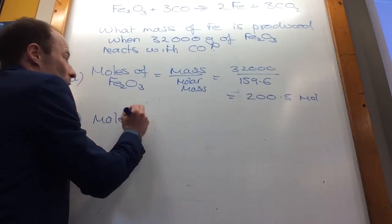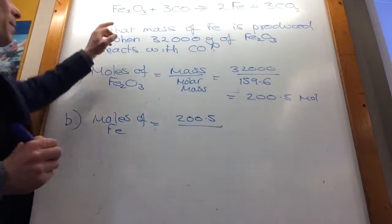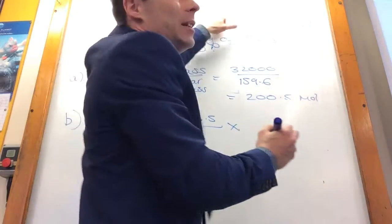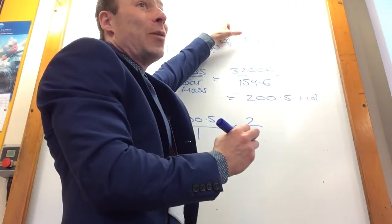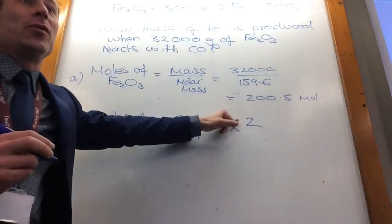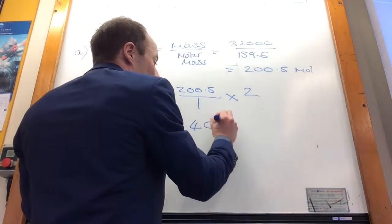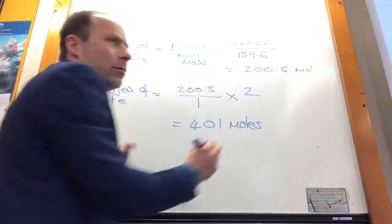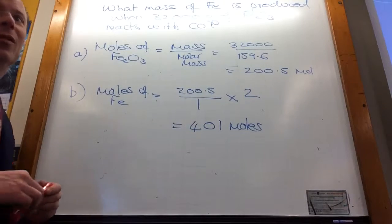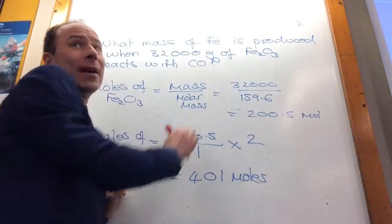The way you do it, so moles of iron is equal, you take that number, you divide it by the number in front, which is one, and you times it by the number of the moles you want to find, which is two. That way you always get the ratio right. So divide it by the big number in front of the moles you've just found, times it by the number that you want to find. So that gives you 401 moles. Are you not happy with that? We are. Are you sure?